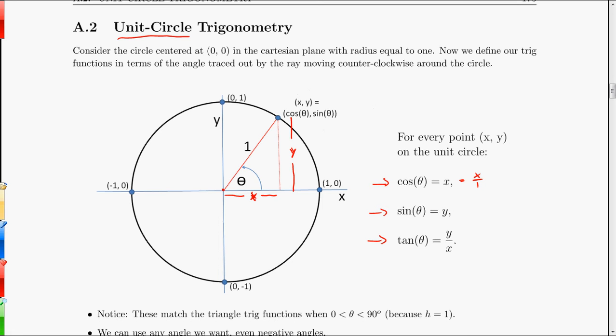So the cosine of that angle is just going to be x over the hypotenuse, which is one. The sine is just going to be the opposite, which is y over the hypotenuse, which is one. And then the tangent is just going to be the opposite over the adjacent, which is y over x. So as long as we're floating around in this first quadrant, triangle trig and unit circle trig are actually the same.